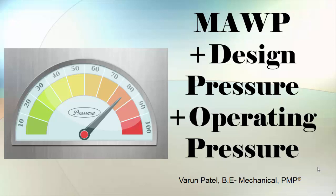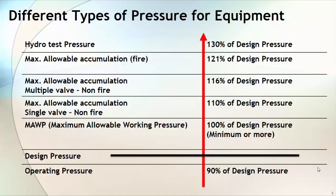These four terms are very much related. Let's start with operating pressure. Let's assume that you have designed one process plant and that plant is going to operate with certain pressure and temperature. Based on your process condition you will select the safe operating pressure for your equipment, and that will become your operating pressure.